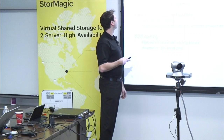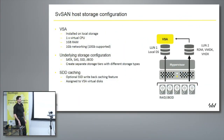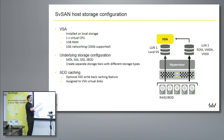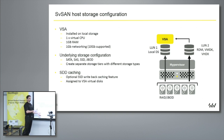The VSA itself has very low resource requirements. We require one virtual CPU, and we recommend a 2 GB reservation. We will expand up from there depending on your IO requirements. Some customers are using less CPU, but that would directly affect performance. One gig of RAM and one gig networking at a minimum — we support 10 gig. The underlying storage can be any flavor: SATA, SAS, SSD — depends on your applications, and we'll architect it out correctly.